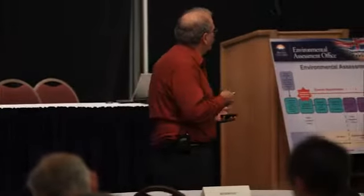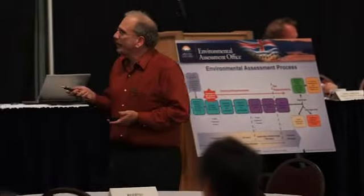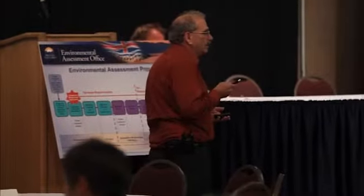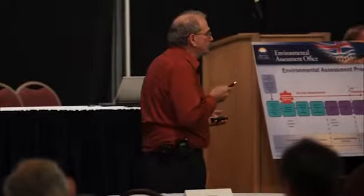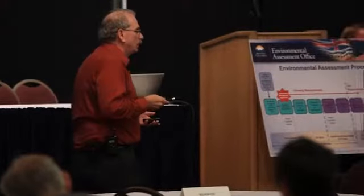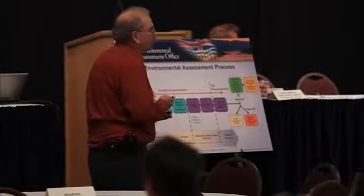The problem formulation also identifies the regulatory allowable exposure limits — the allowable daily exposure levels set by Health Canada or Environment Canada. From a human health perspective, these are set by Health Canada, and they represent the daily exposures you can have, in milligrams per kilogram per day, every day of your life. As long as your exposures are below those, Health Canada is convinced you do not have a health concern. We're not making these numbers up. The numbers we use come directly from federal agencies, and if they're not available here, the federal agencies tell us to go to the States. We're not inventing any of this.